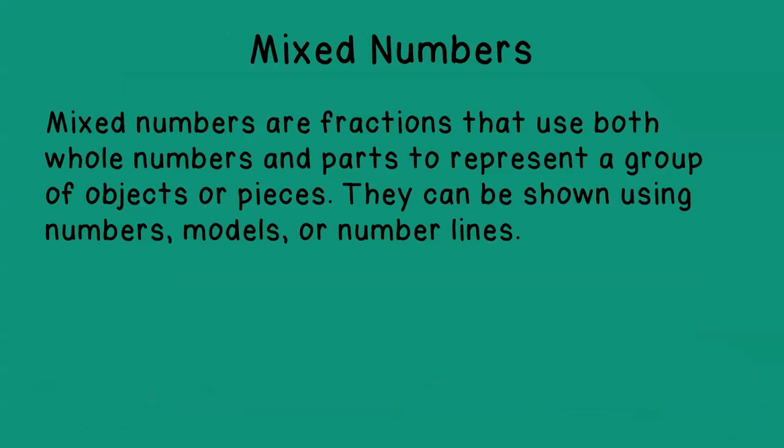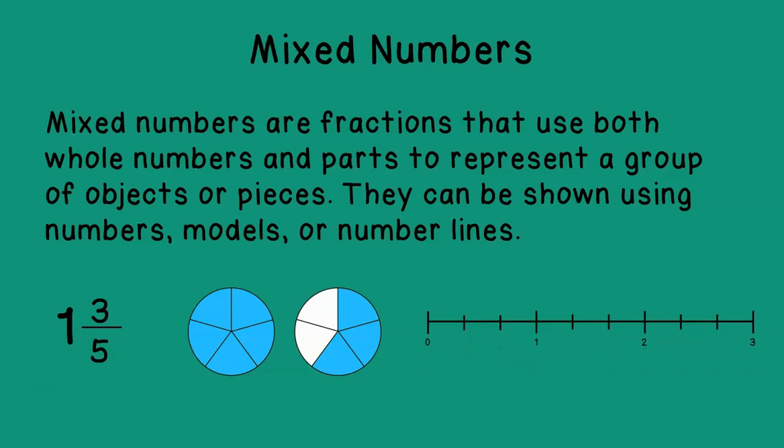Now if you remember, mixed numbers are fractions that use both whole numbers and parts to represent a group of objects or pieces. And they can be shown using numbers, like this one right here, which reads 1 and 3/5, by using models. So we have one that's completely filled in, so that would be our whole. We have one of those and then a model of 3/5, so 1 and 3/5. Or, and this is new for us, using a number line.